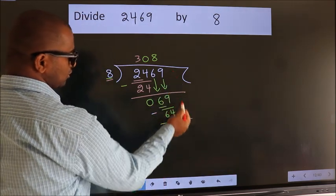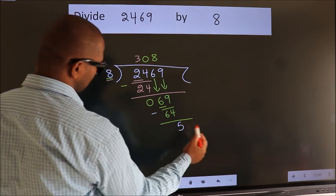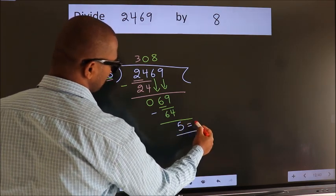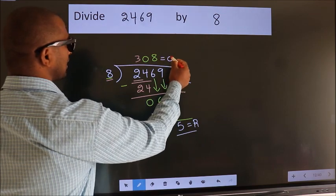No more numbers to bring it down. So, we stop here. This is our remainder. This is our quotient.